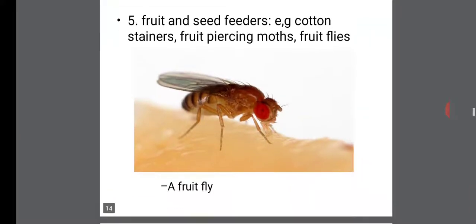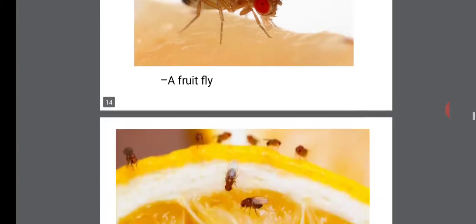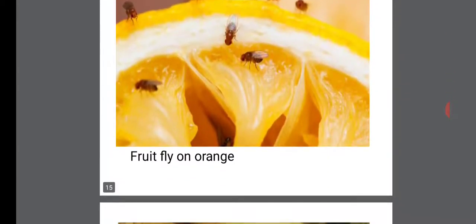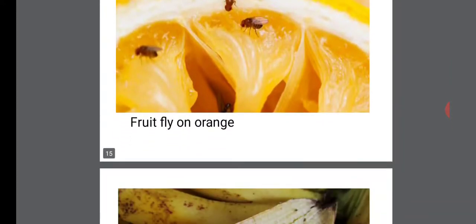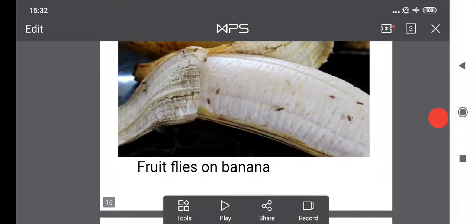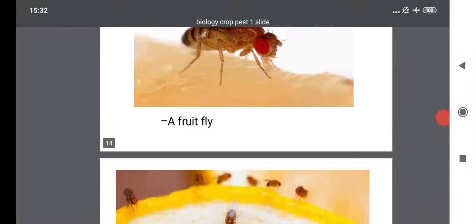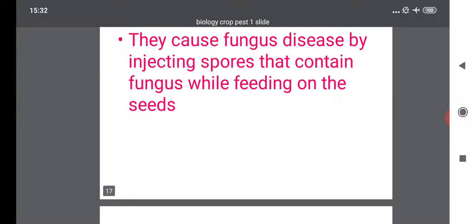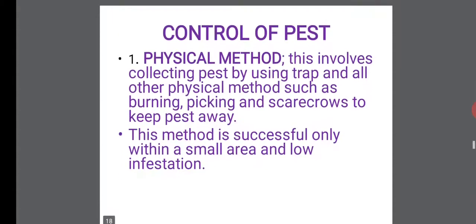The fruit and seed feeders. For example, the cotton stainers, the fruit-piercing moths, and fruit flies. You can see fruit flies on this orange, feeding on it, and also on a banana. The effect of fruit flies is that they cause fungal disease by injecting spores containing fungus while feeding on the fruit or seed.